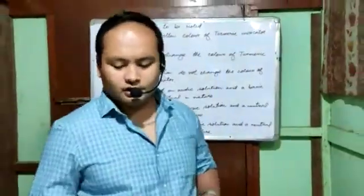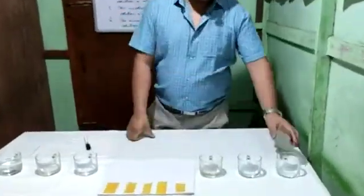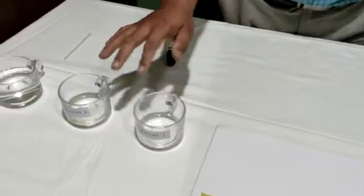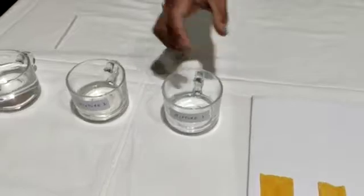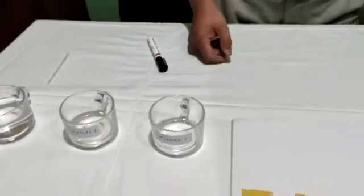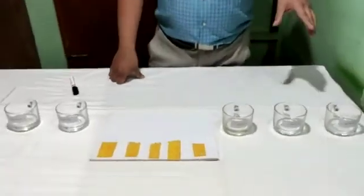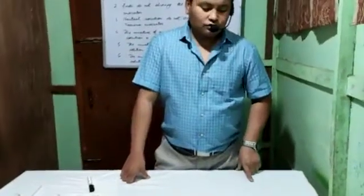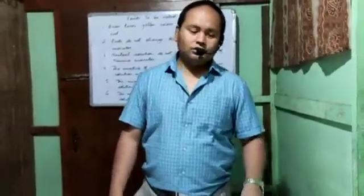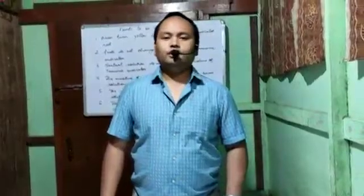Now let's come to our activity. Before we actually start, I'd like to introduce what these things are. So this is liquid 1, liquid 2, liquid 3, and this is mixture 1 beaker and mixture 2 beaker — these two will be made afterward. In fact, these three liquids are actually an acidic solution, a basic solution, and a neutral solution, but we don't know which one is which. We will find out which one is the acidic, which is the basic, and which is the neutral solution with the help of turmeric indicators.